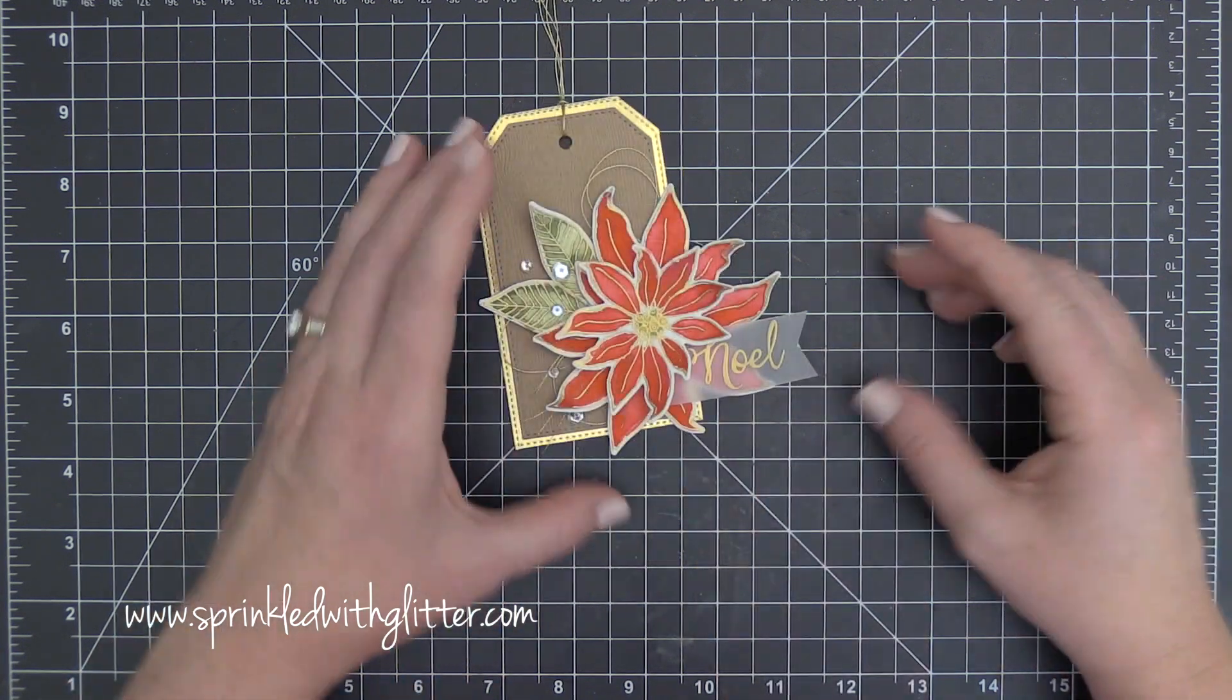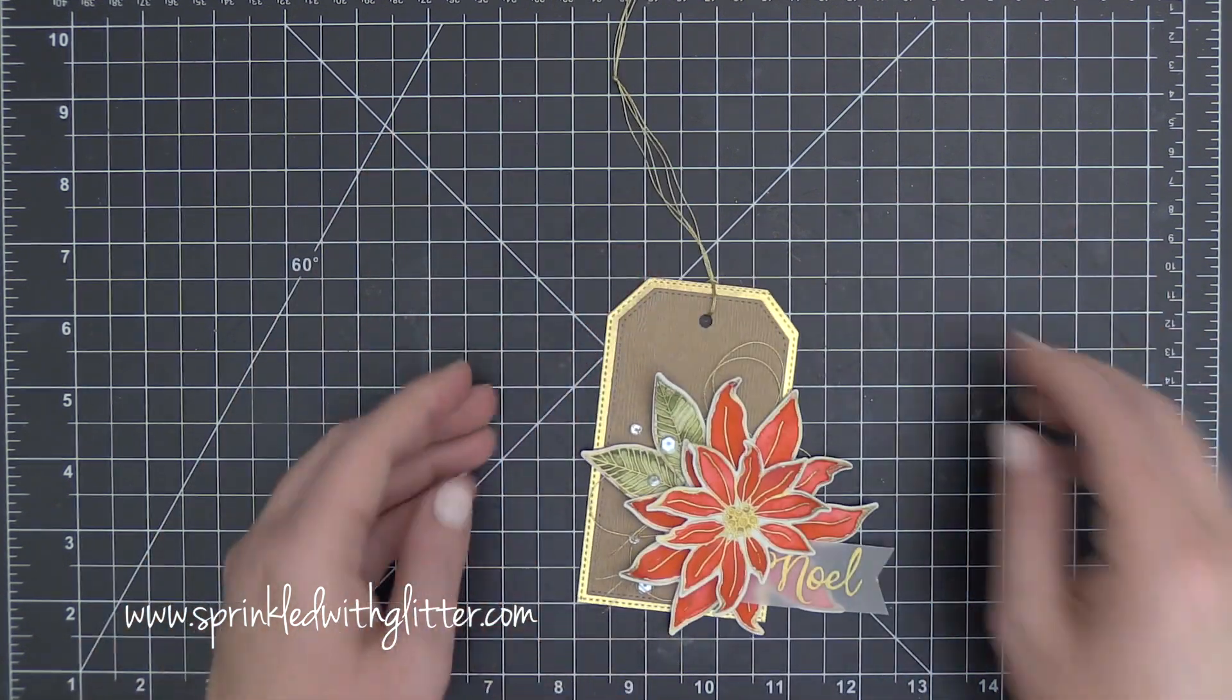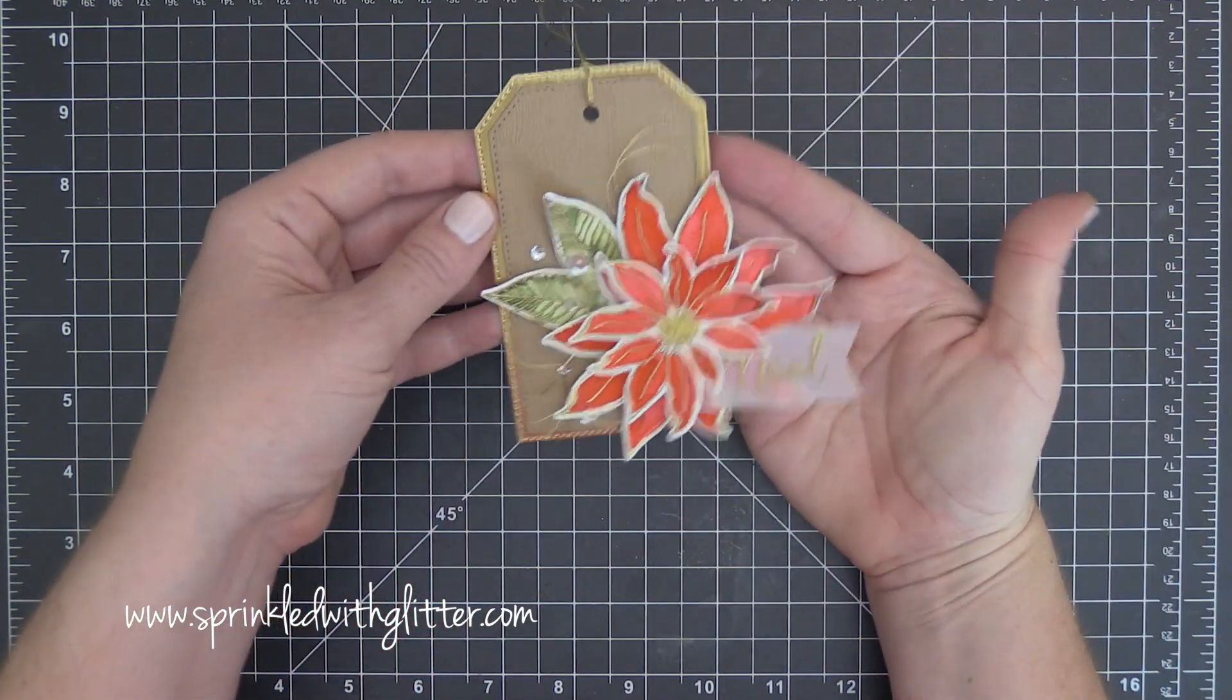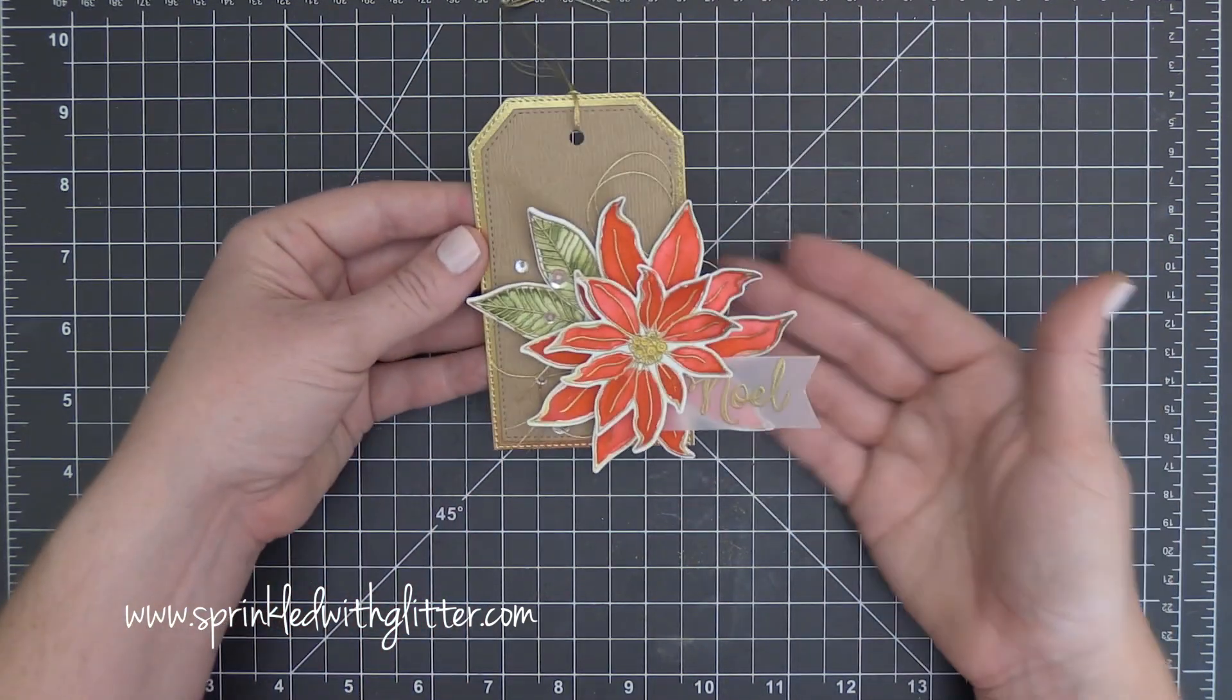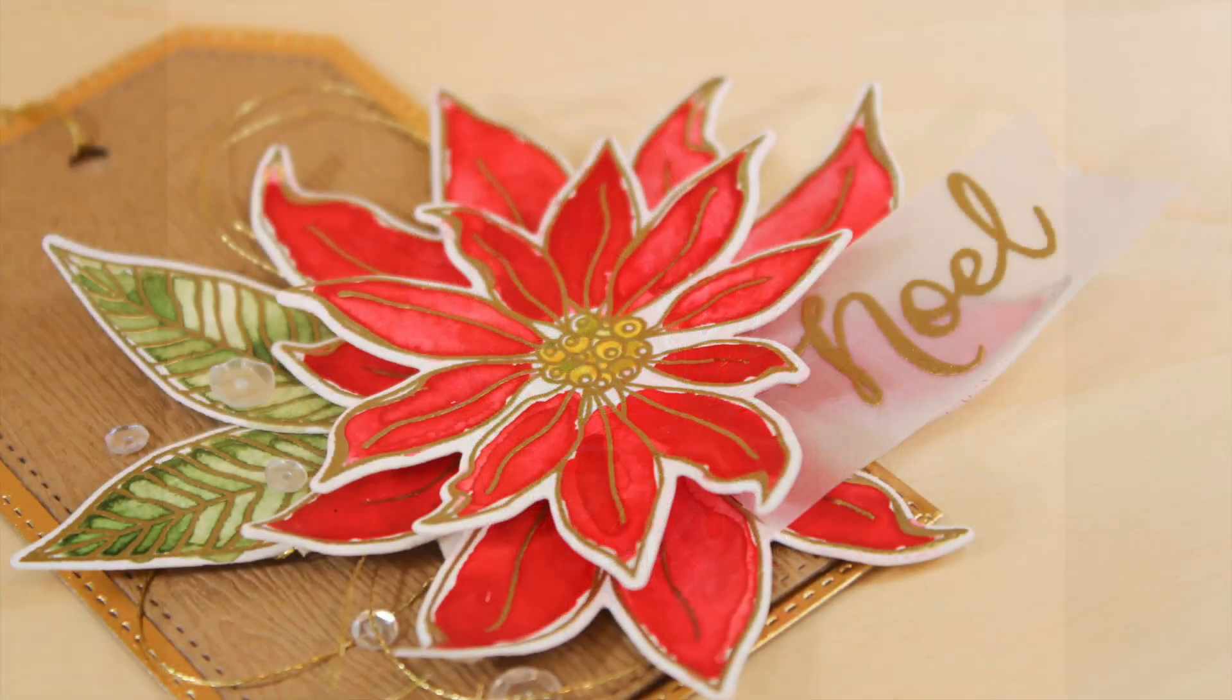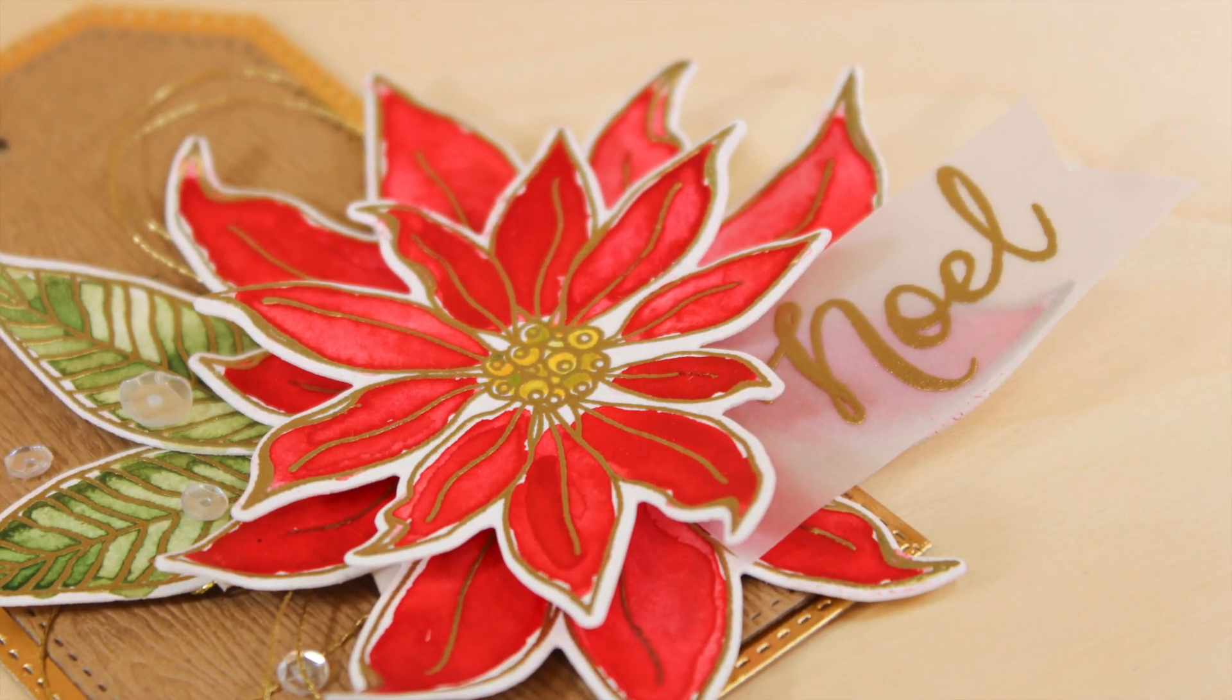To finish up the tag I went ahead and let that multi-mat medium kind of sit up and get a really good bond. Then I went back and kind of curled up the petals of these flowers to give it even more dimension. It kind of makes that flower really come to life and make it feel like it's blooming off of the tag.